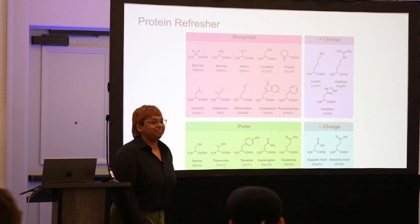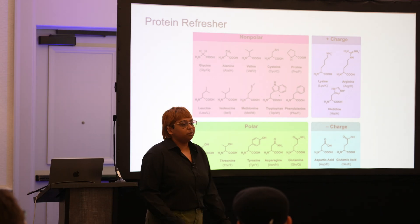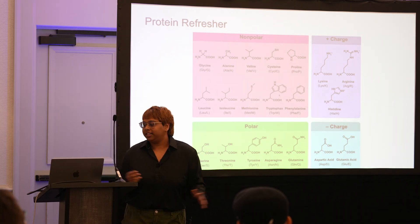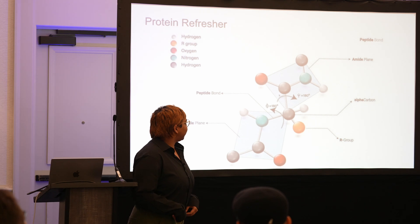Hopefully everyone knows this, but proteins are made up of amino acids. The amino acids are split into four main groups and they can interact with each other in various ways: nonpolar, polar, positively charged, and negatively charged. We'll talk more about how these interact with each other later, but just to get everyone refreshed with what proteins look like.